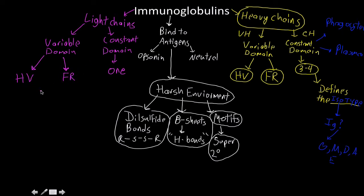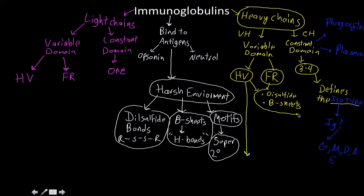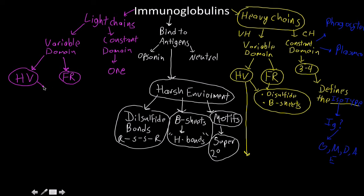Both the hypervariable region and the framework region contain a disulfide bond and beta sheets. The hypervariable region has an additional function beyond this, whereas the framework region is just a stabilizing factor — it holds the structure in place. Both the light and heavy chain variable domains share disulfide bonds and beta sheets, which contribute to the overall structure.